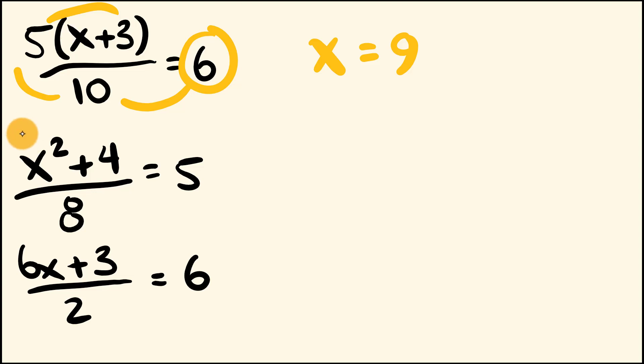Alright, let's have a look at the next one. We have x squared plus 4 over 8 equals 5. So for this question, we're going to start with our 5 here. We're going to multiply by 8. Then we're going to subtract 4, and then we're going to work out the square root of that, because the opposite of squared is the square root. So let's go through and do this.